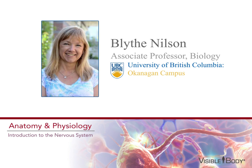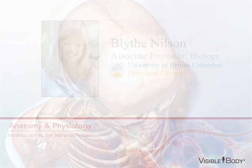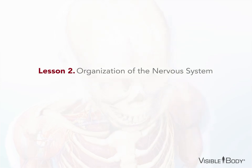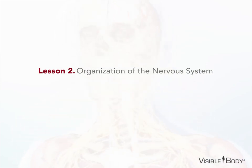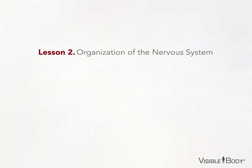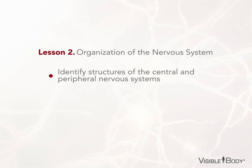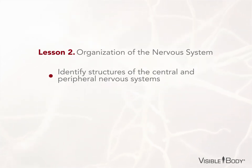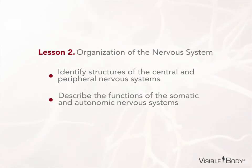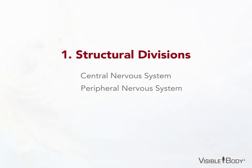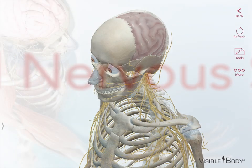Hi, I'm Blythe Nelson and today we're going to talk about the nervous system. We're going to cover four key ideas about how the nervous system is organized. You'll then be able to identify the structures of the central and peripheral nervous systems and describe the functions of the somatic and autonomic nervous systems. We'll begin with Part 1, Structural Divisions, beginning with the central nervous system.